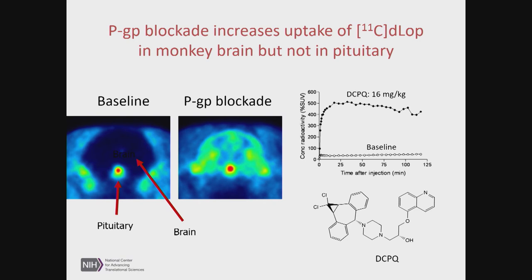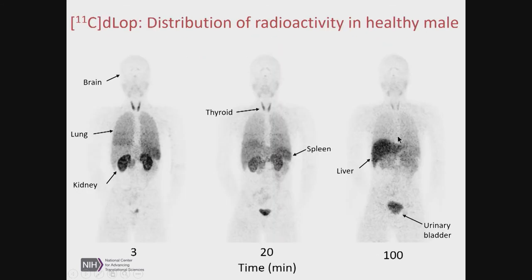Further monkey brain studies showed high pituitary signal and low brain signal until PGP blockade with DCPQ. At a pharmacologically achievable dose of inhibitor, we get very high and very stable uptake of loperamide in the brain, with very low baseline signal without a pharmacologic blocker — demonstrating that PGP can really keep this substrate out of the brain. These studies are also important because there's a very active field studying whether co-administering an adjuvant blocker of PGP might facilitate increased drug uptake of a small molecule drug candidate, and this is proof that that's achievable.